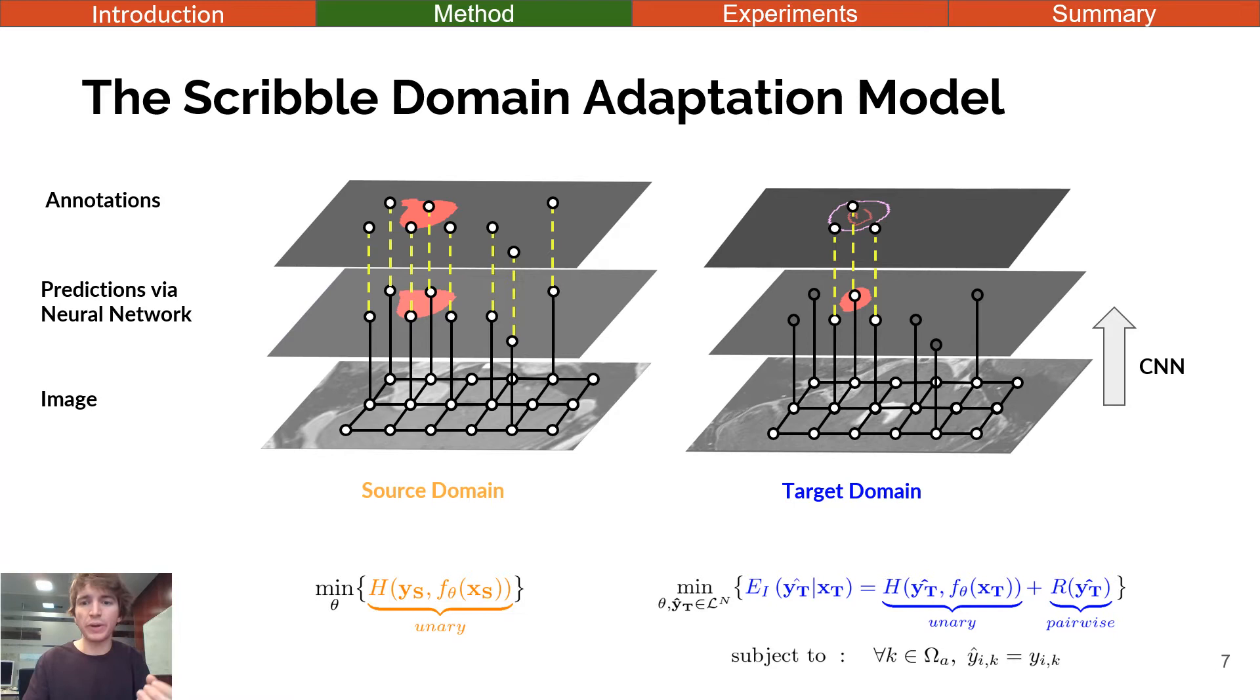Thanks to this model, we allow propagating information within the image. However, we do not propagate information between the two domains. Inspired by co-segmentation, we propose to not only connect the voxels within the images, but also between the different images. Here, the similarity between two voxels is not spatial or related to the intensity value due to the domain gap, but related to the feature representation extracted from the neural network. Two voxels are likely to be similarly classified if they have a similar feature representation. Consequently, by minimizing this pairwise term, we encourage the network to learn a similar feature representation for two voxels associated to the same label, but from two different domains. In other terms, this encourages the network to learn a domain-invariant feature representation to perform domain adaptation.